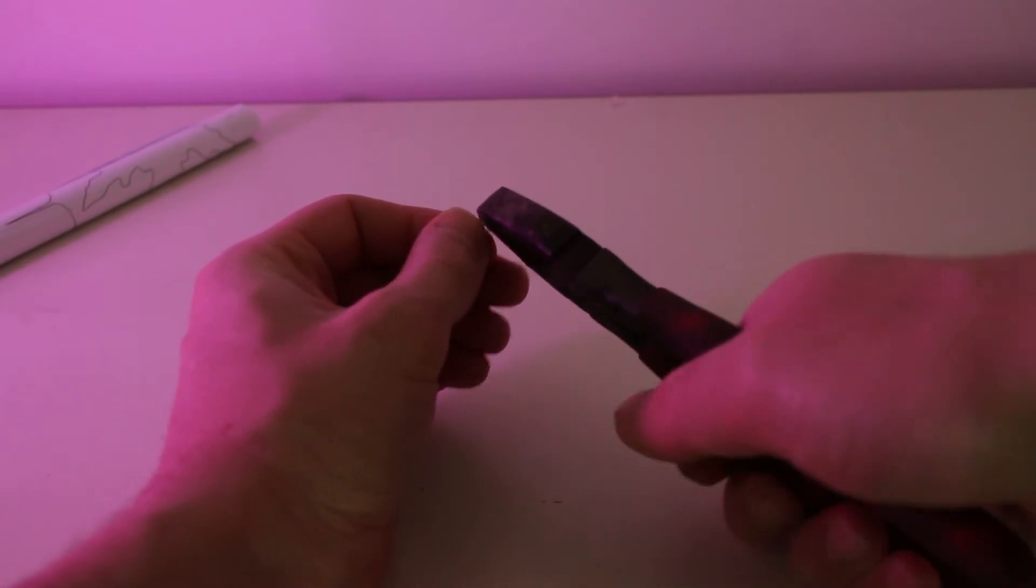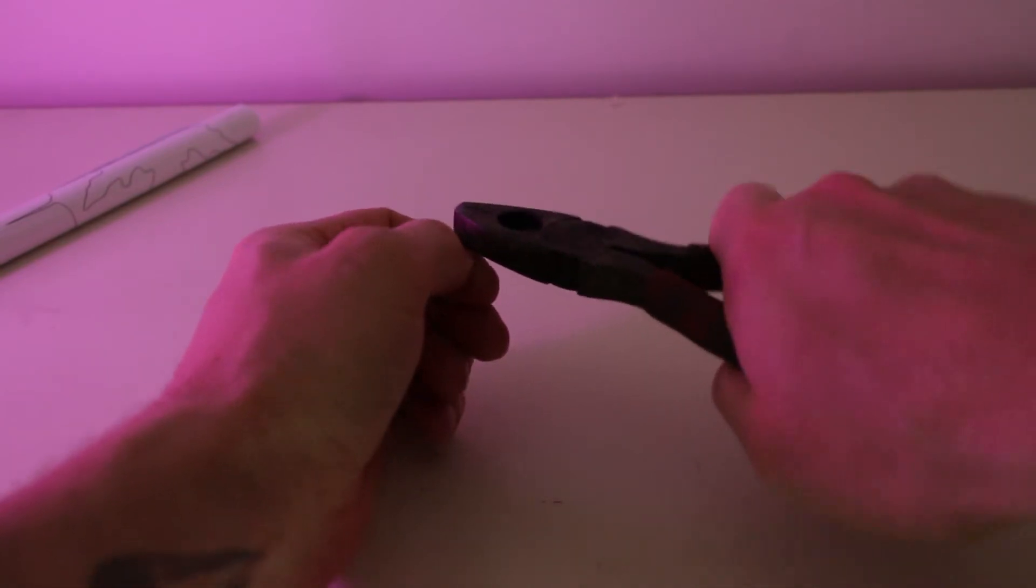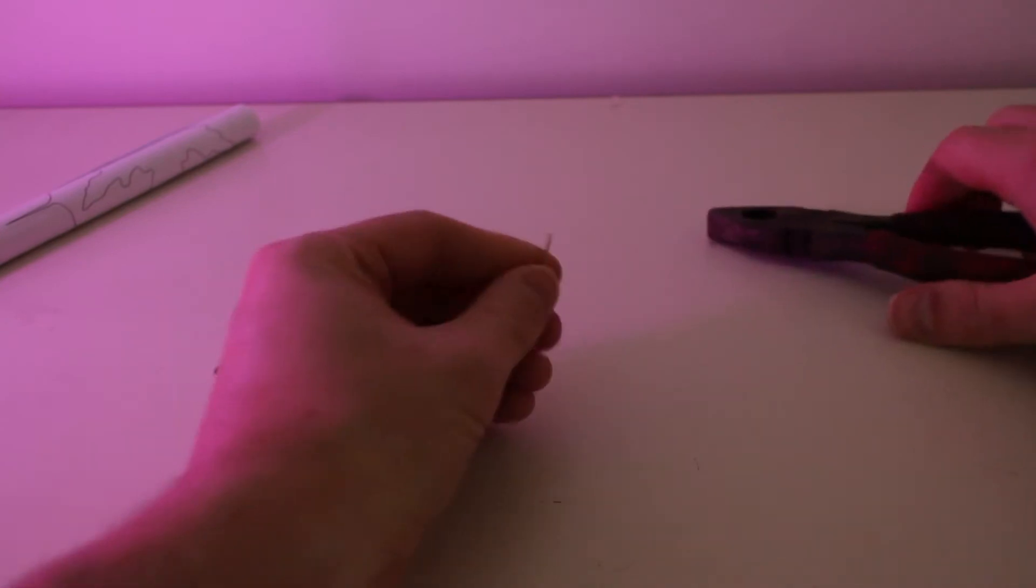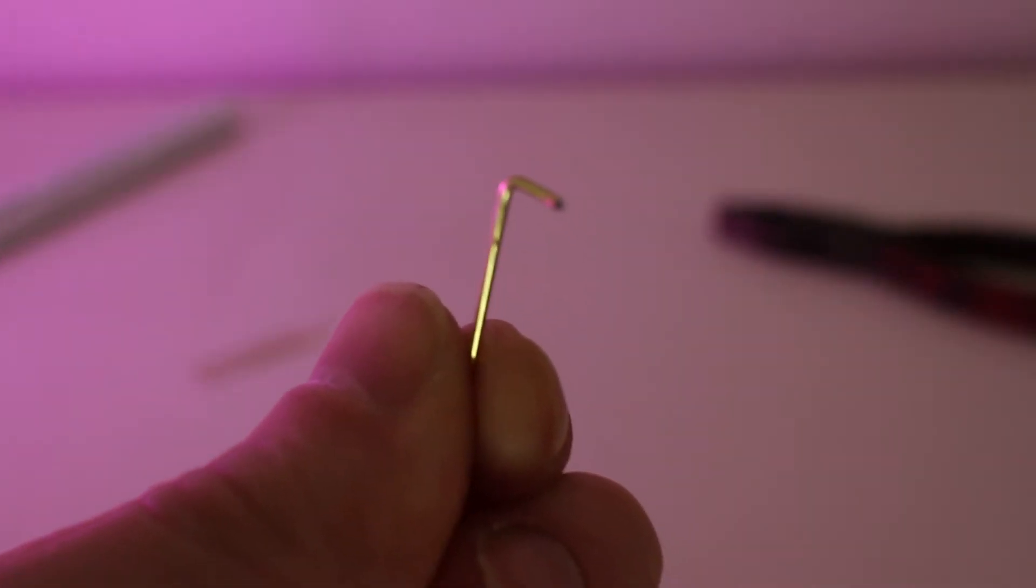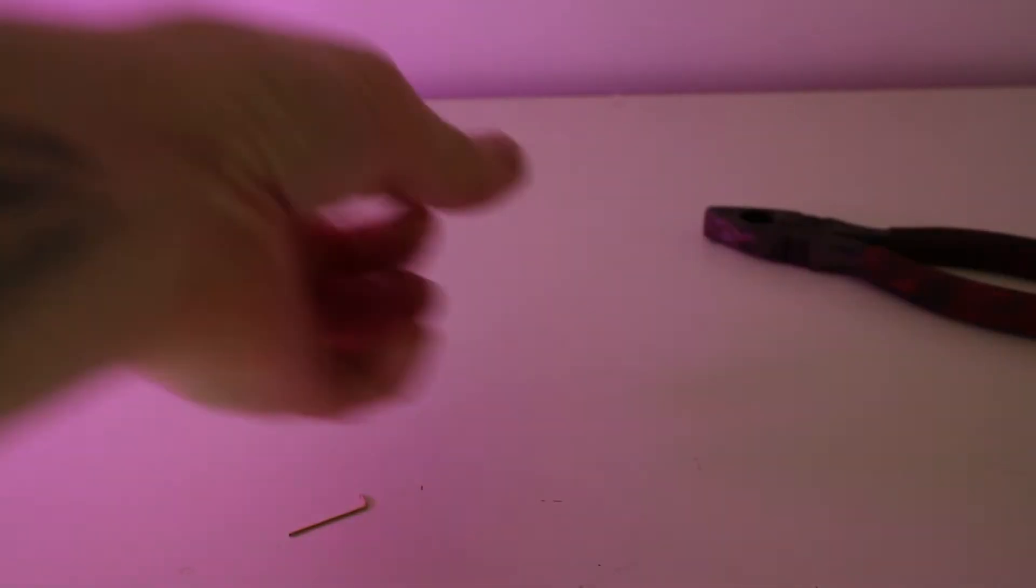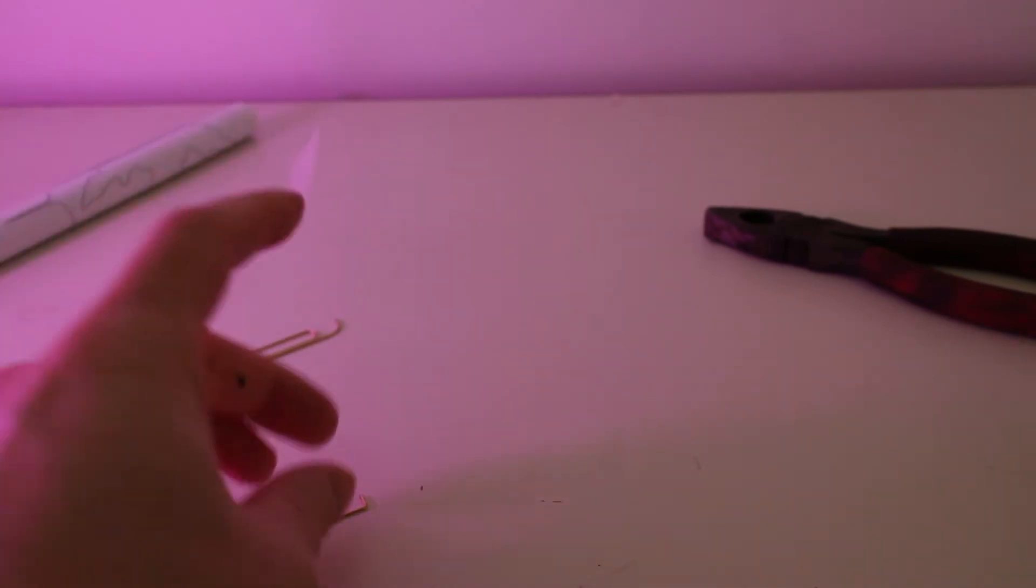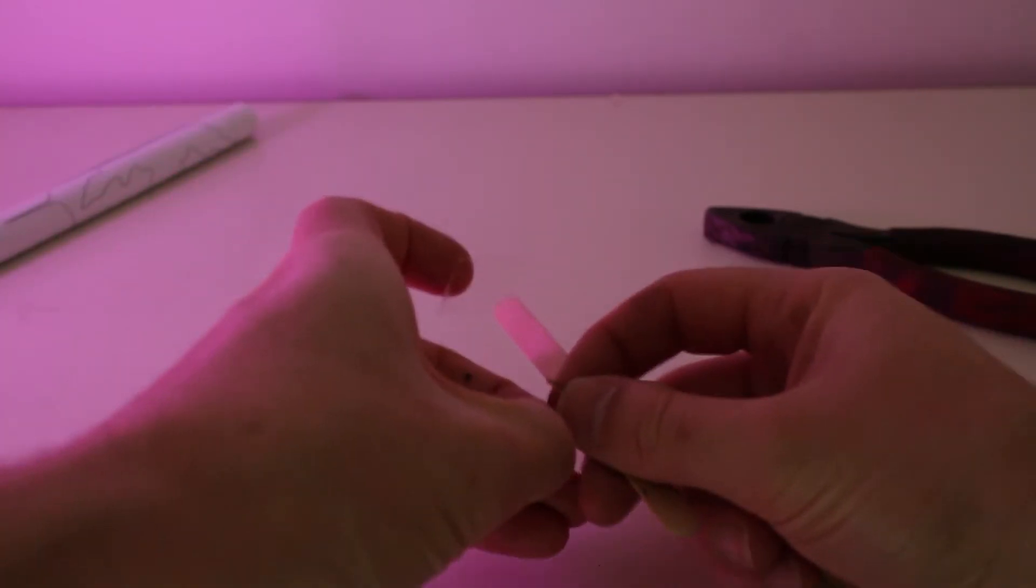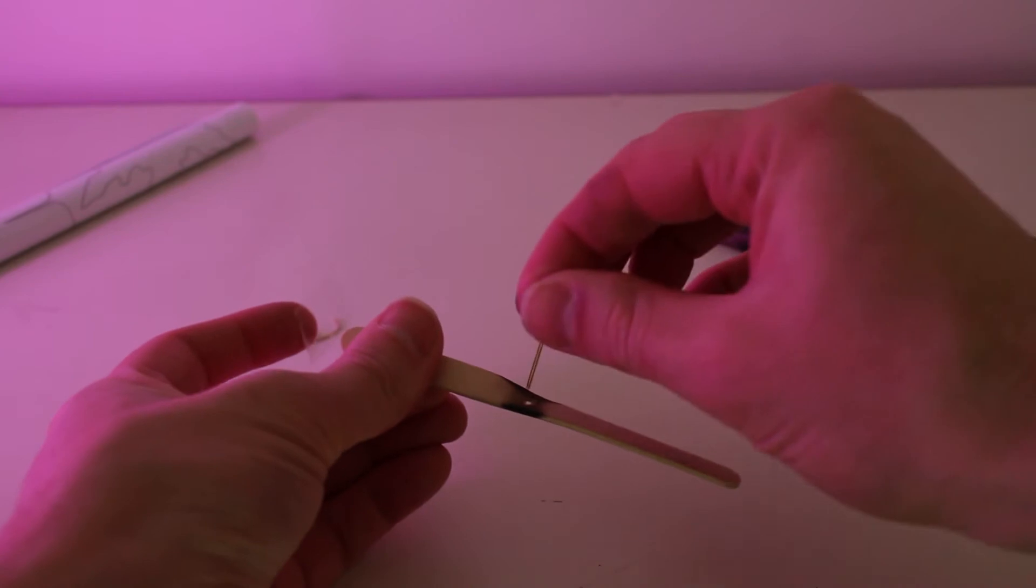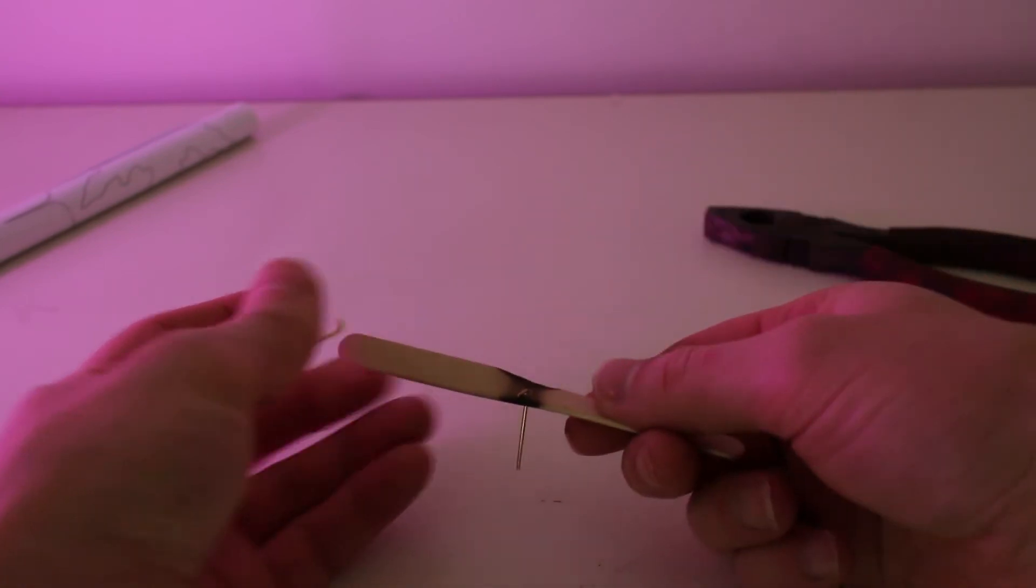Now we need to bend the end of the piece of wire to secure it to the propeller. Feed the paper clip through the hole and then secure it in place with some sticky tape. If you've got a hot glue gun it will work better.